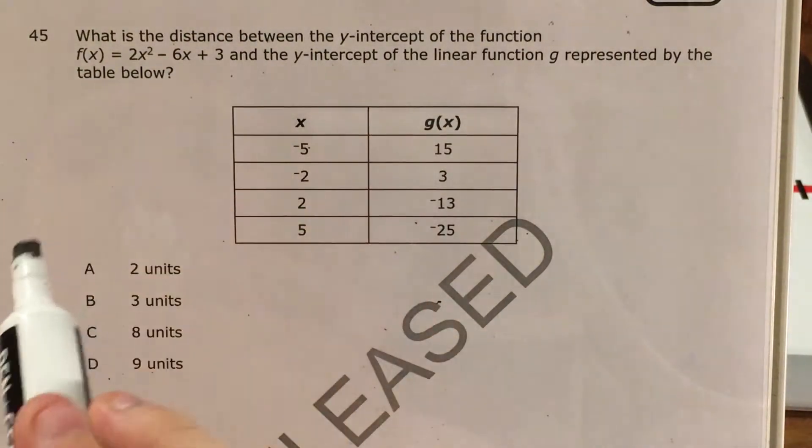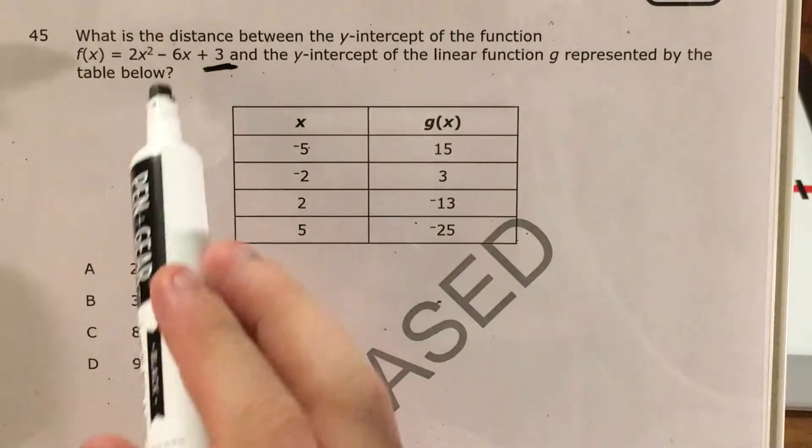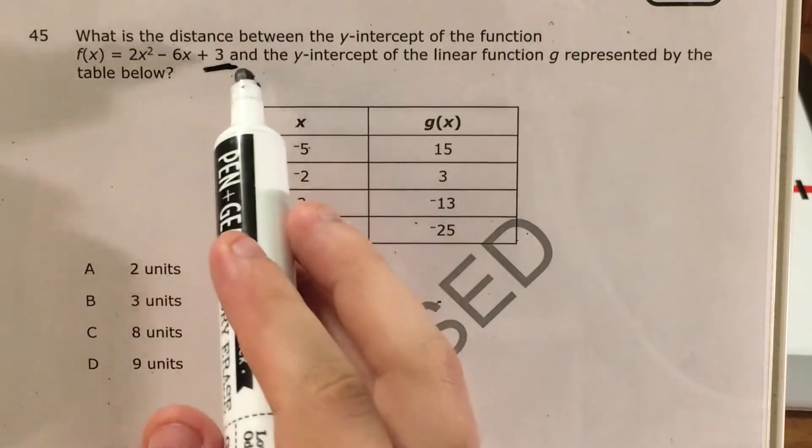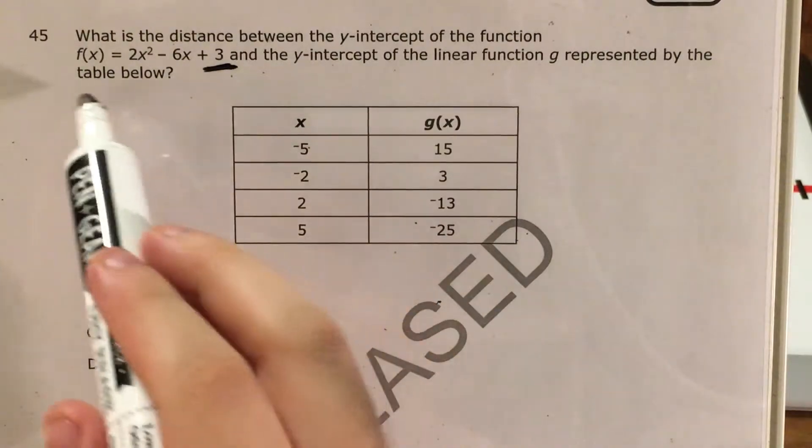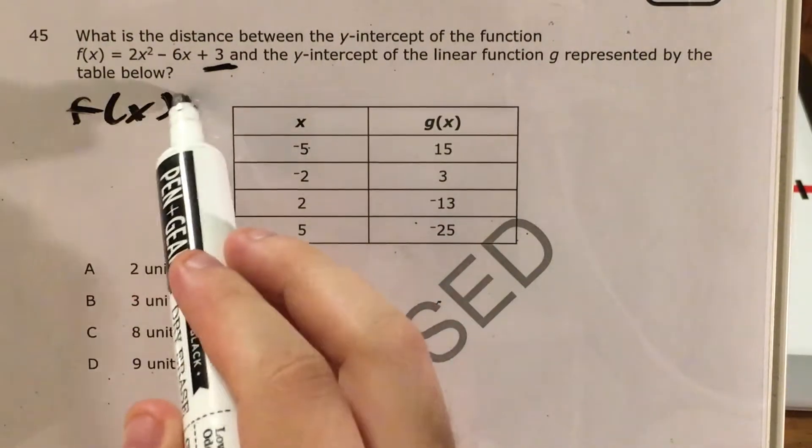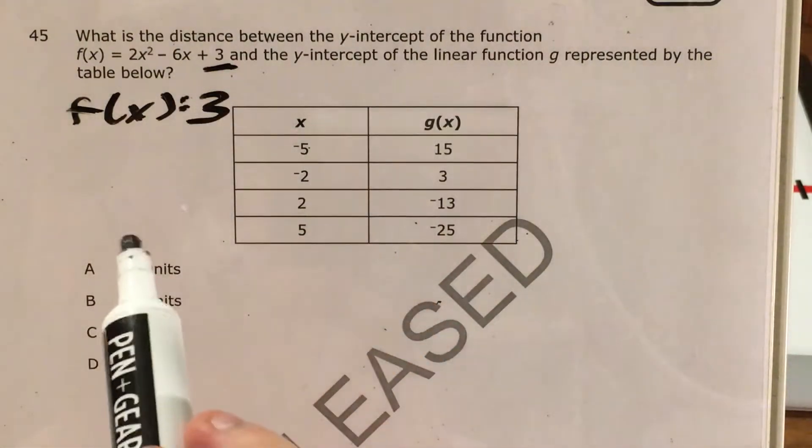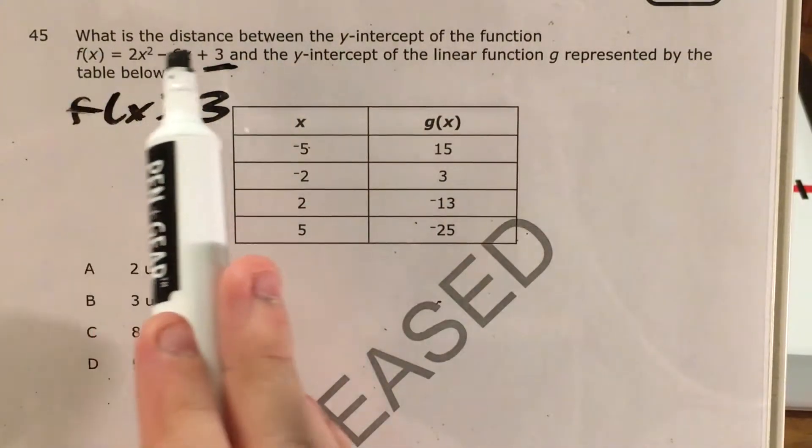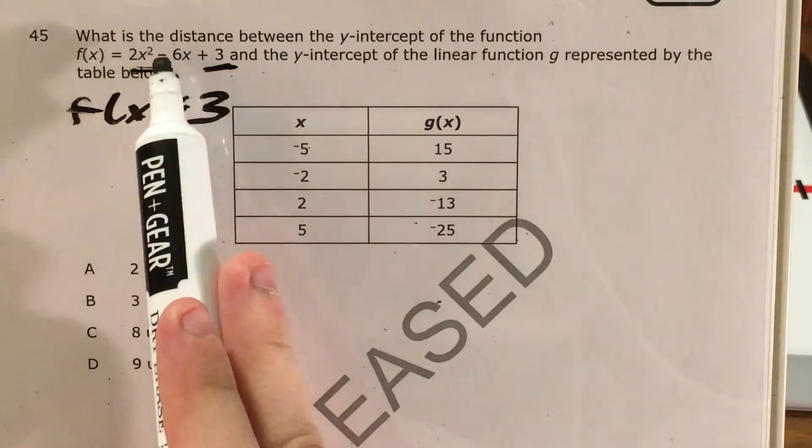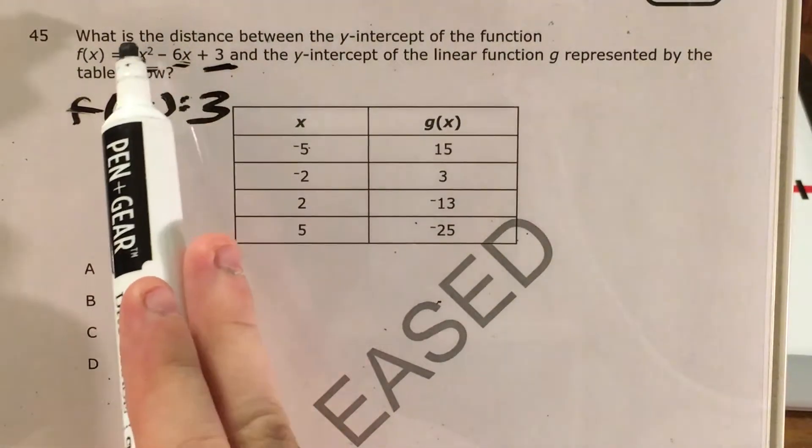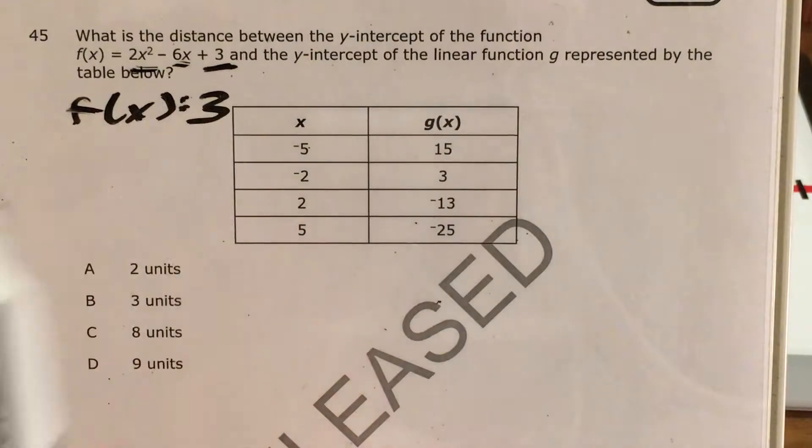Starting with this function f(x), whenever I see any function with x terms and a constant, the constant is my y-intercept. For f(x), my y-intercept is 3, because the y-intercept is what happens when x equals 0. If I plug 0 in for x, both x terms become 0, and 0 - 0 + 3 gives me 3.